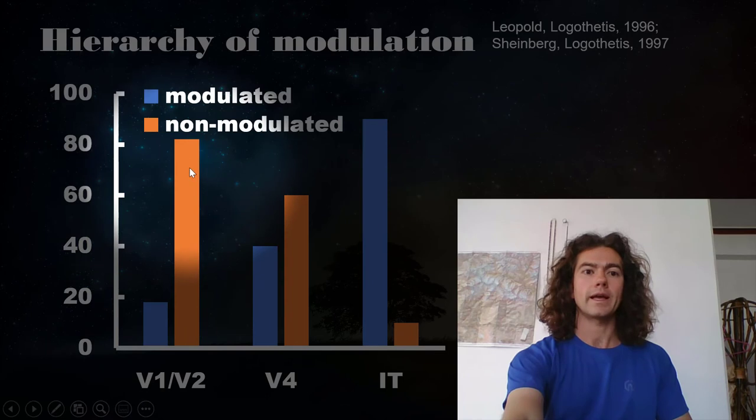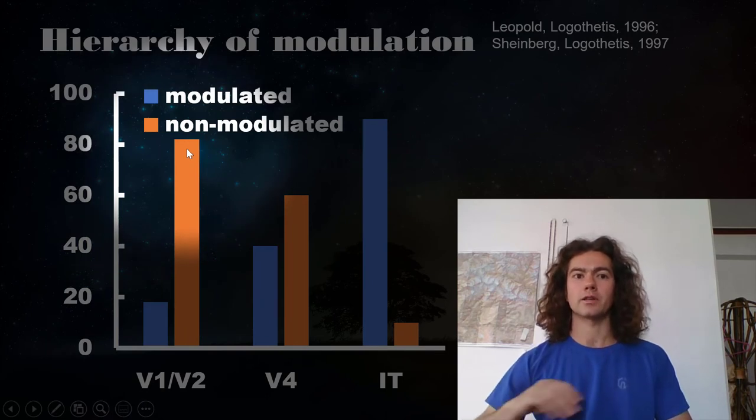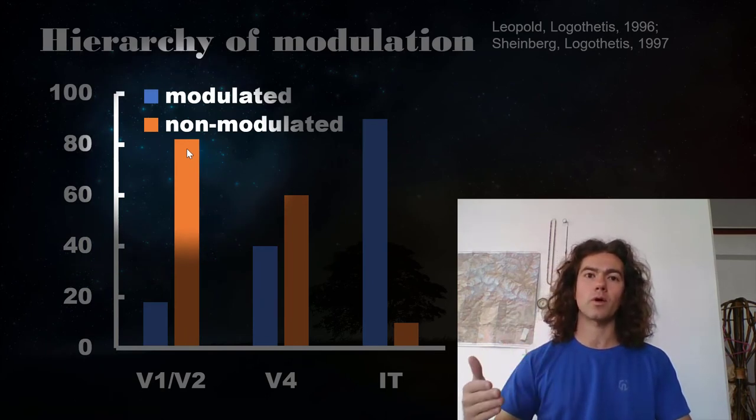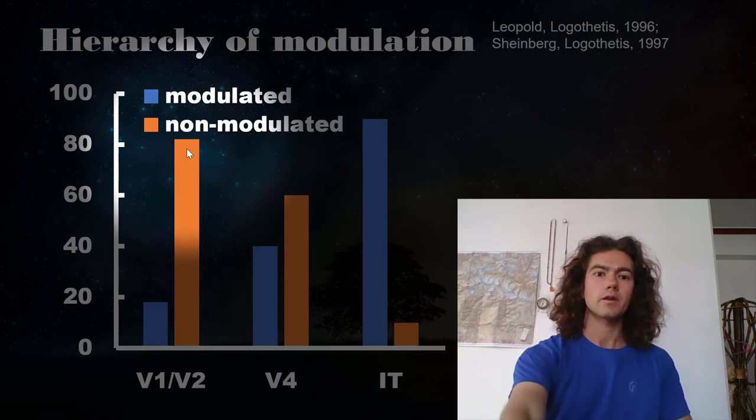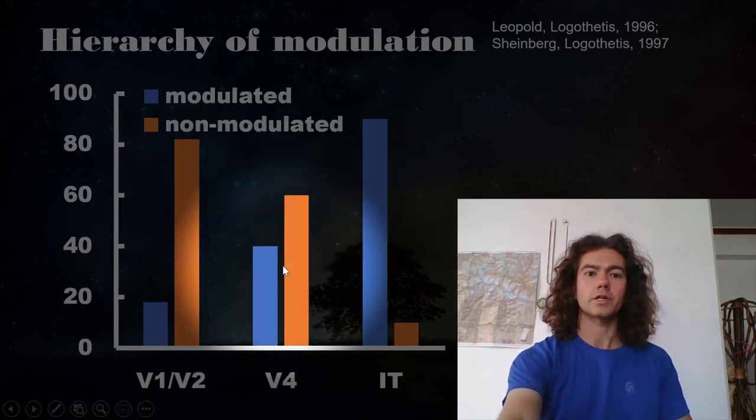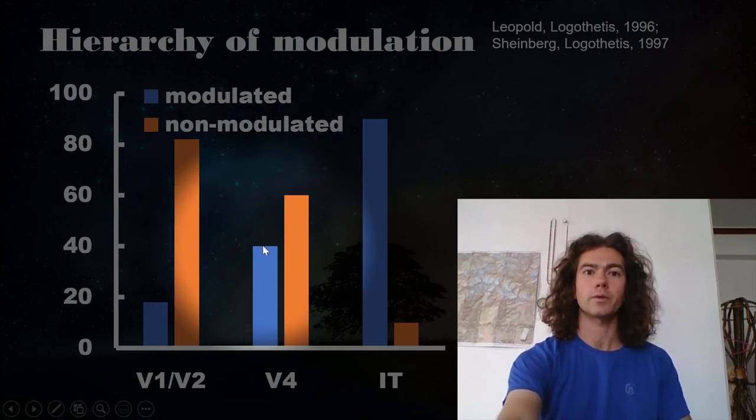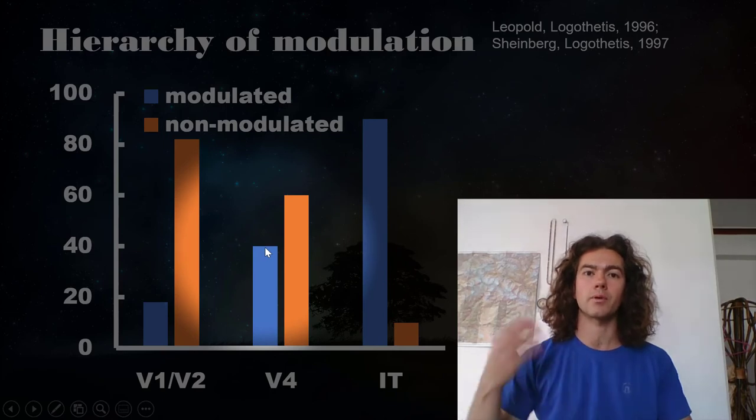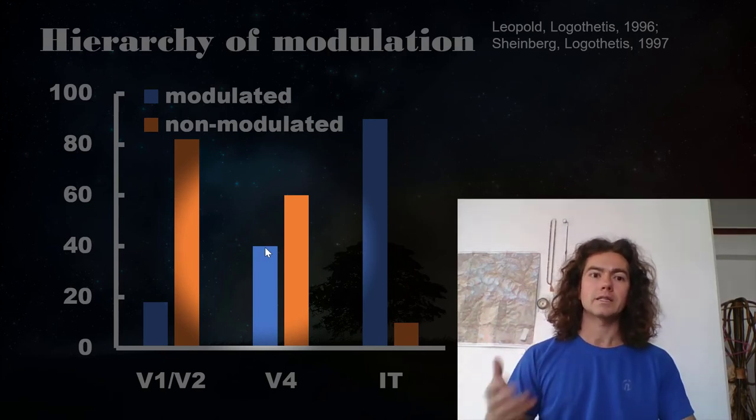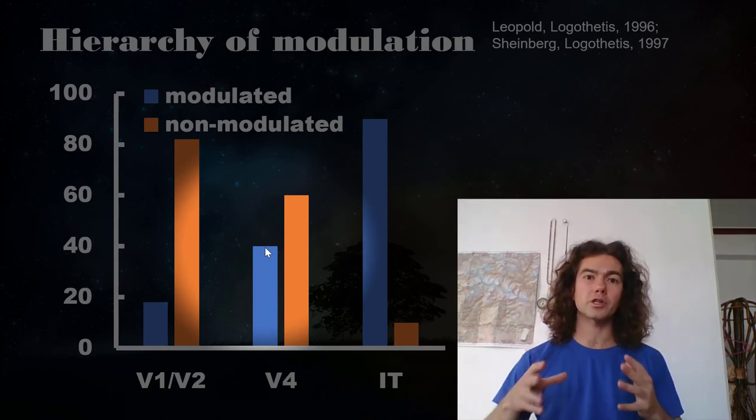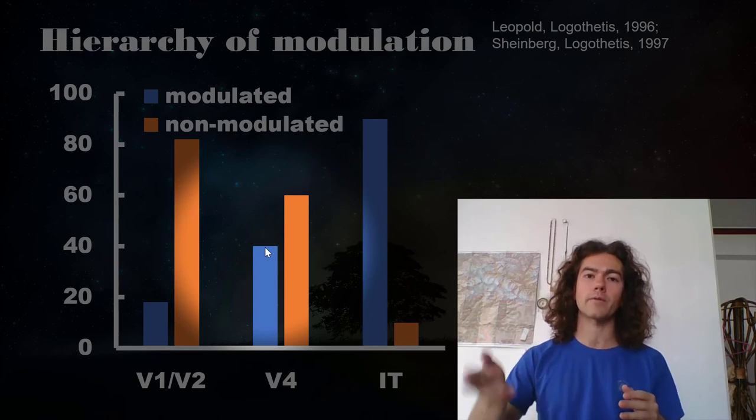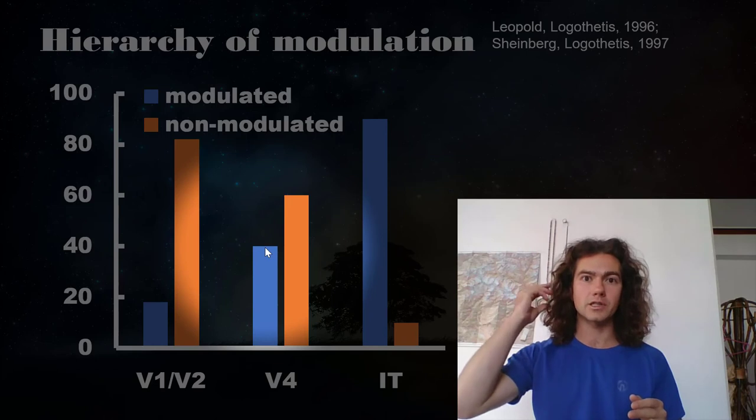And what we can see here is that when Logothetis and Leopold took a look back in V1, V2, about 80% of cells were non-modulated. They would fire in exactly the same way, regardless of the monkey's conscious report. But in V4, the story changed. In V4, only 60% were non-modulated, and now it was up to 40% of the cells were modulated by the monkey's conscious perception. Still though, the majority of them are just firing to faithfully represent whatever's hitting the retina, and are not paying attention to what the monkey's consciously perceiving.